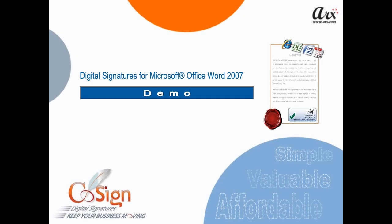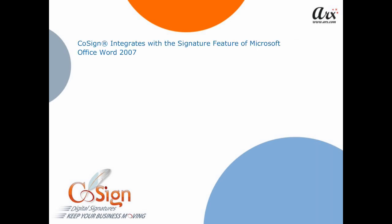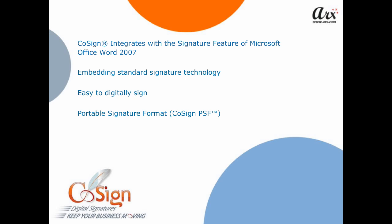Welcome to the CoSign Digital Signature Demo for Microsoft Office Word 2007. CoSign integrates with the signature feature of Microsoft Office Word 2007. By embedding standard signature technology directly into mainstream business applications, CoSign makes it easy to digitally sign transactions, documents, and records. CoSign creates a portable signature format that allows anyone to seamlessly retain and verify proof of identity.